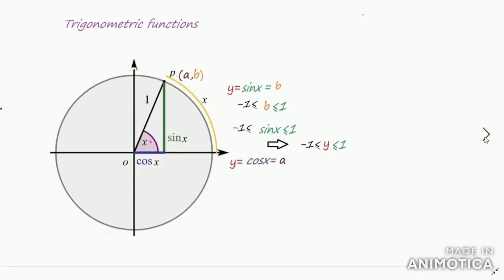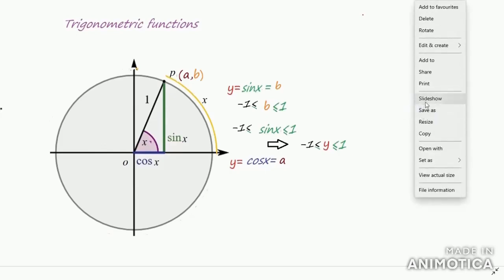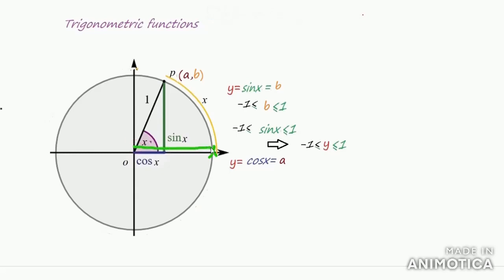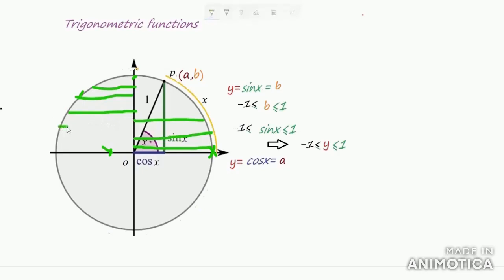Similarly, for the cosine function, if you define y = cos x, the definition gives cos x = a, where a is the x-coordinate of the point on the unit circle. You can observe the different values taken by the x-coordinate. When the point is at the rightmost position, the x-coordinate is 1, that is the maximum. As we move the point, the x-coordinate reduces; when we reach the top, x-coordinate becomes 0. Moving further, the x-coordinate becomes negative.